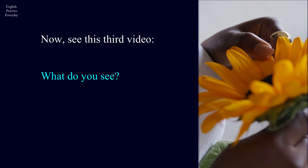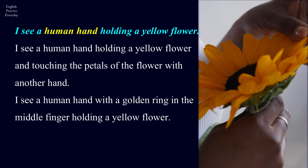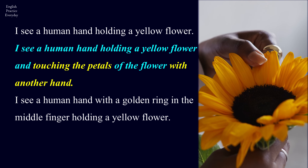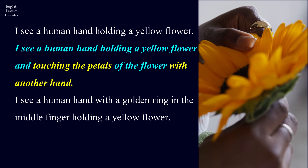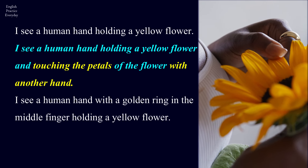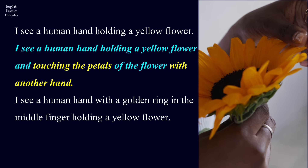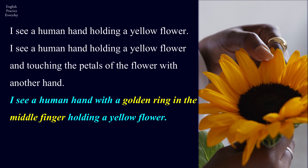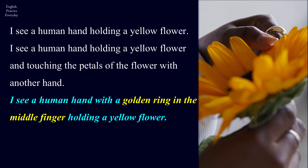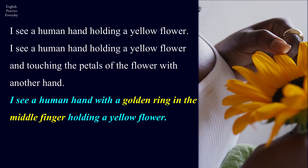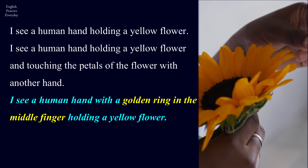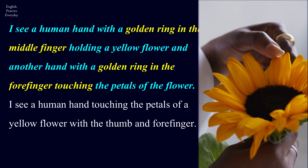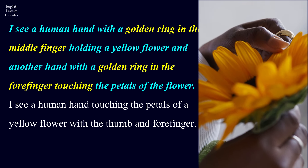Now see this third video. What do you see? I see a human hand holding a yellow flower. I see a human hand holding a yellow flower and touching the petals of the flower with another hand. I see a human hand with a golden ring in the middle finger holding a yellow flower, and another hand with a golden ring in the forefinger touching the petals of the flower.